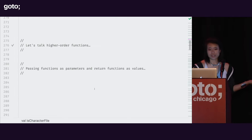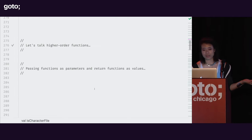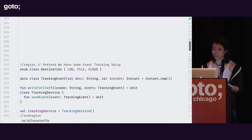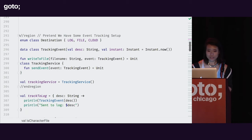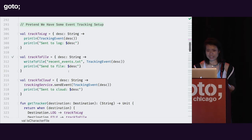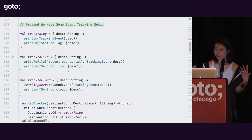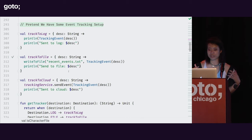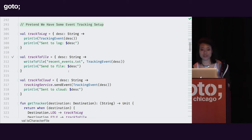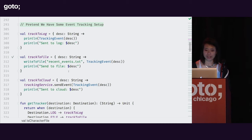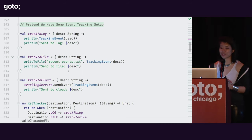Let's talk about how we pass functions around as parameters or return them as values from functions. Say I have different destinations where I want to send tracking events — to a log, to a file, to the cloud. To encapsulate that, maybe I'll write three lambdas: one that tracks to a log, one that tracks to a file, and one that tracks to the cloud.